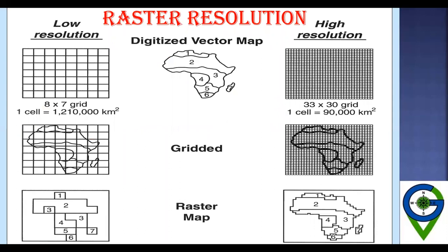Raster resolution determines the size of the grid cells. If a raster has low resolution, the cell size will be bigger. If the raster has high resolution, the grid cells will be smaller. The same digitized vector map converted to a low-resolution raster will look coarse, whereas when represented at high resolution, it closely resembles the original vector map.